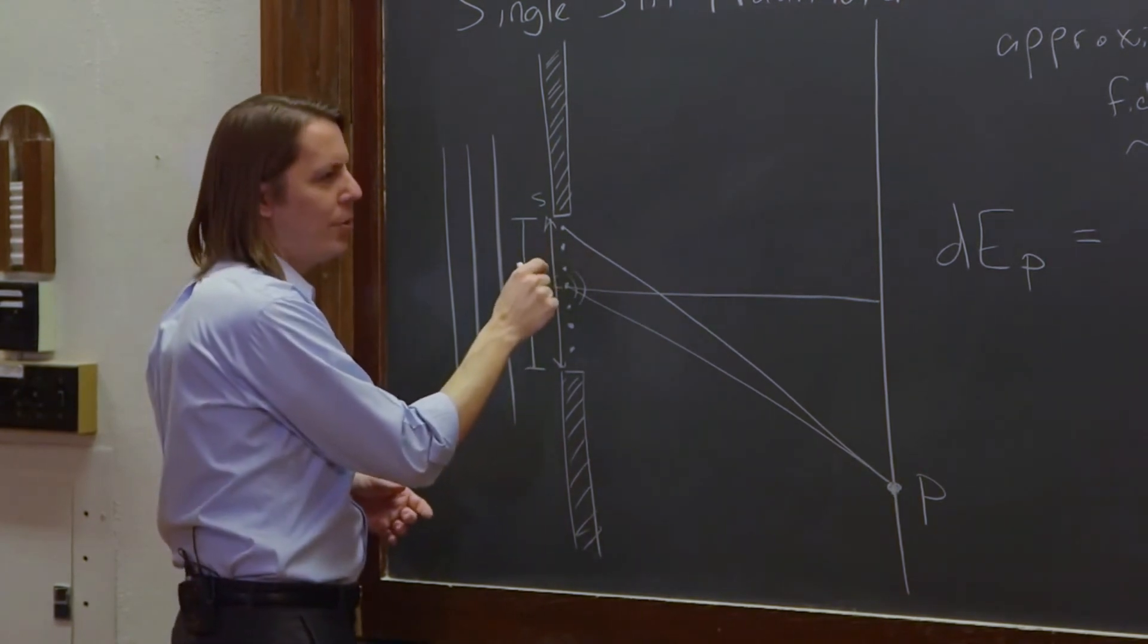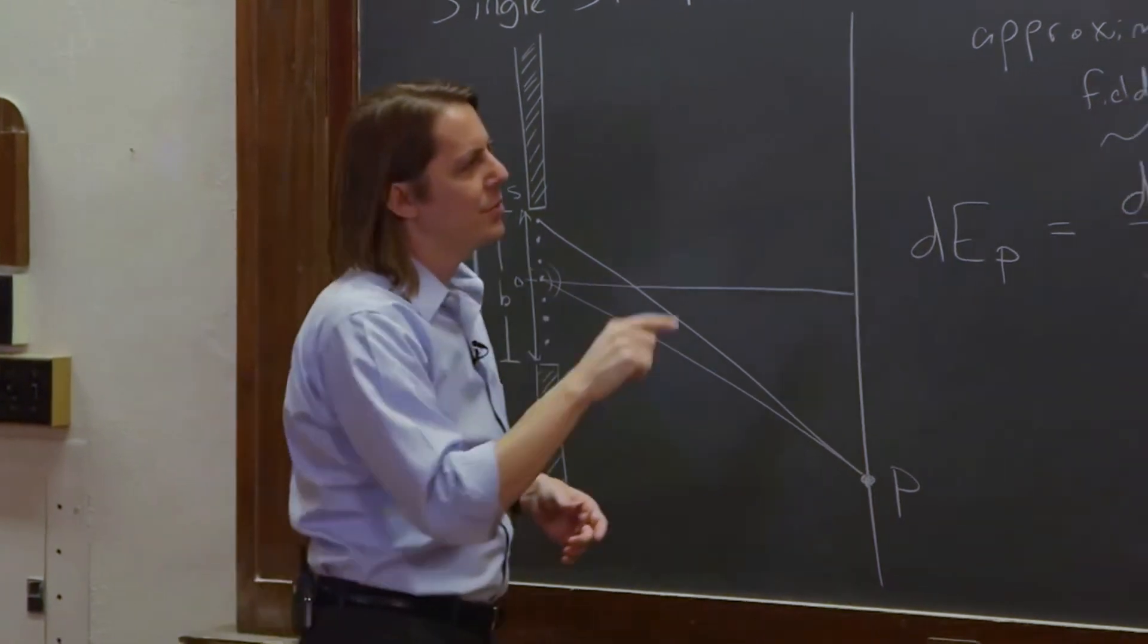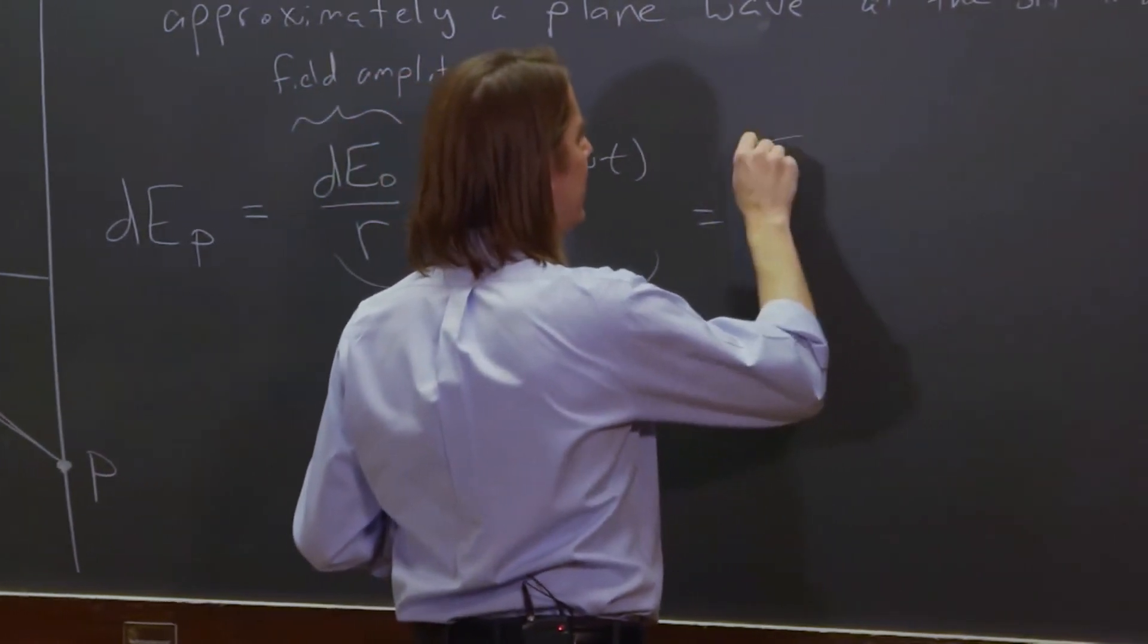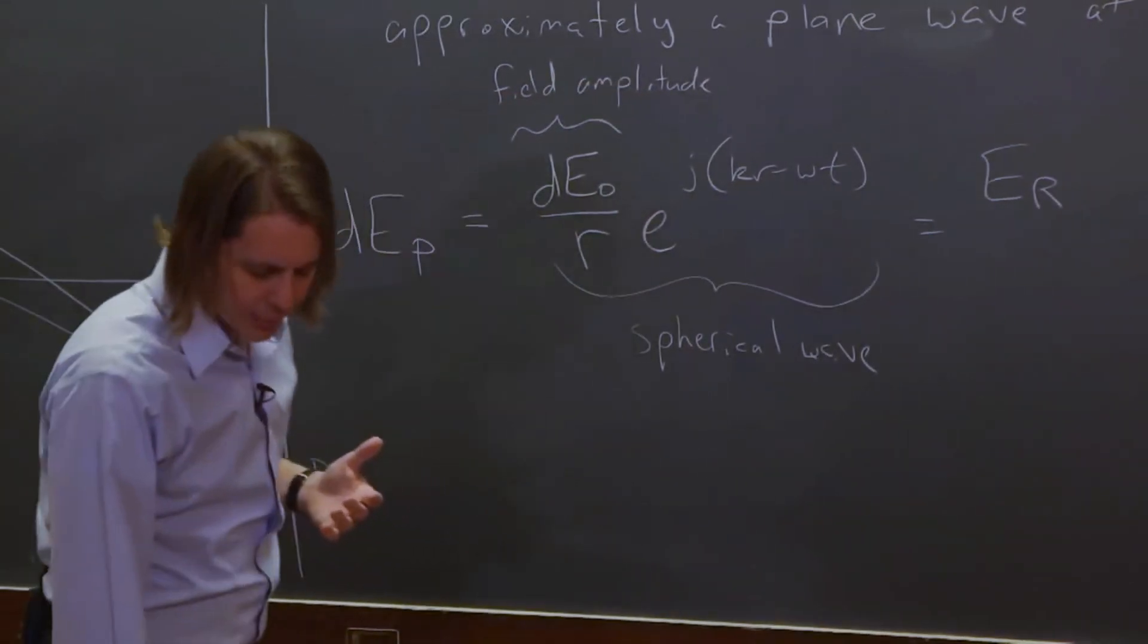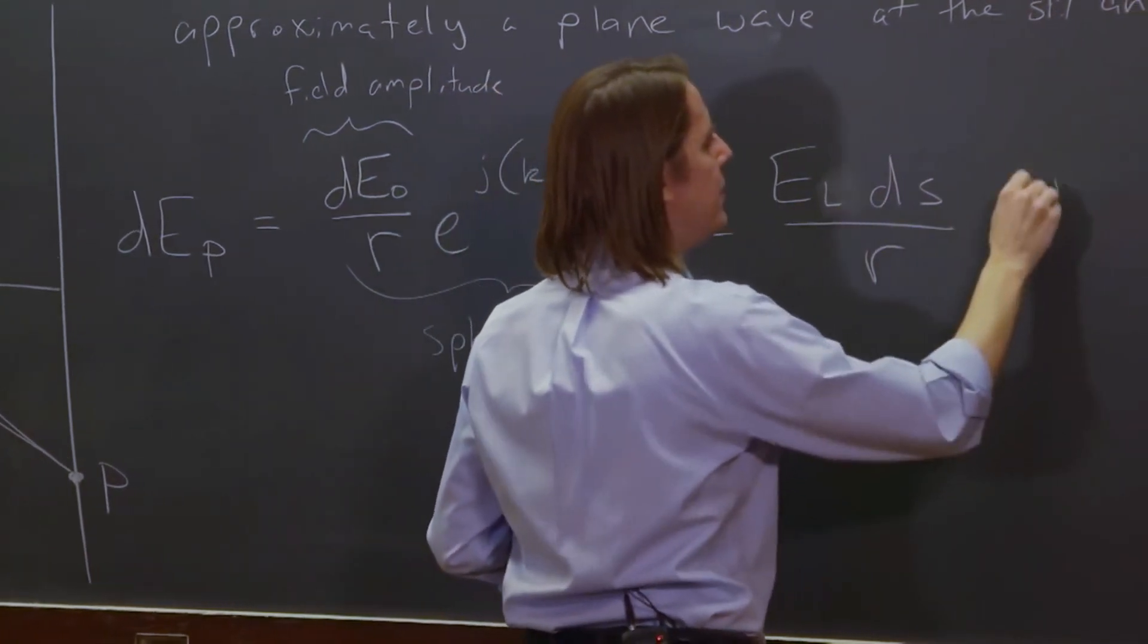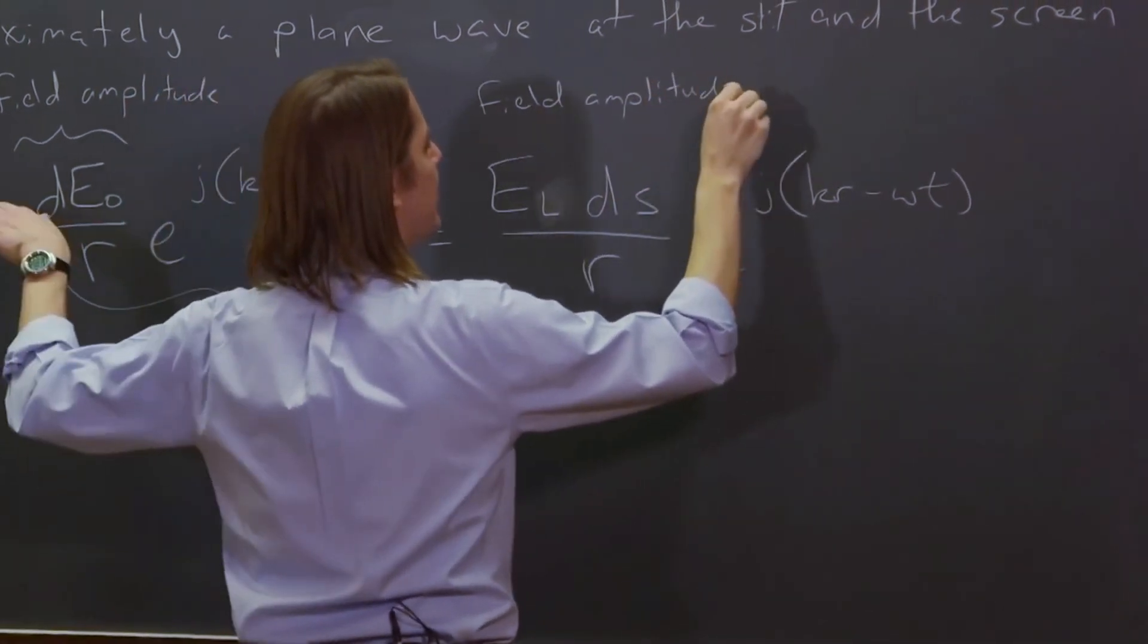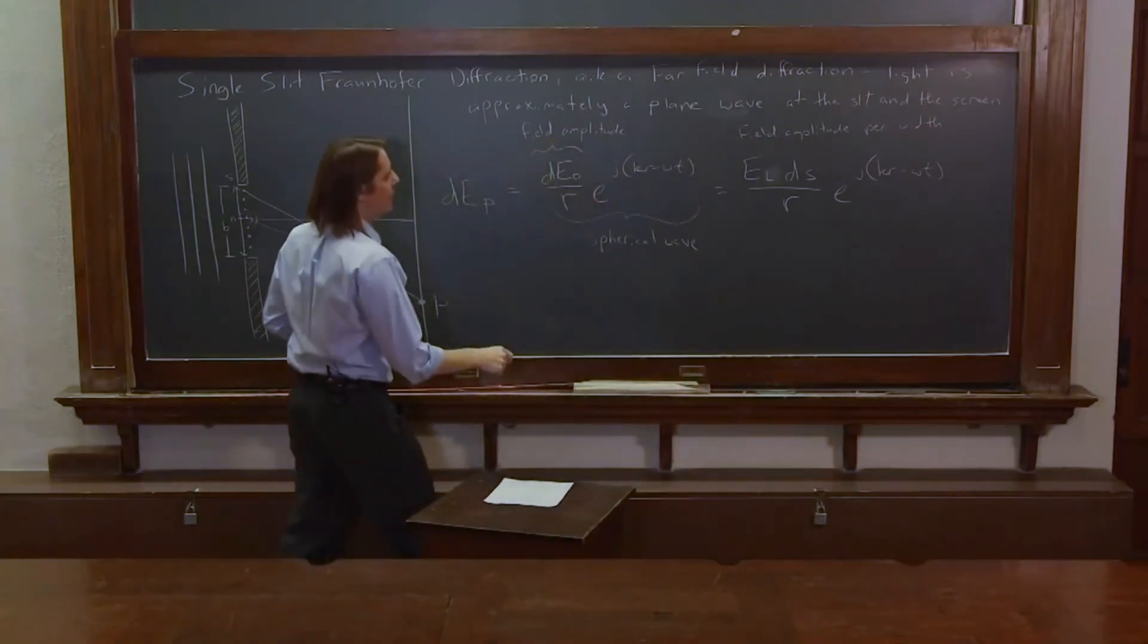So, the way we pick off one of our little Huygens wavelets, Huygens-Fresnel wavelets, is we talk about something times dS. So again, instead of the field amplitude, now we are going to go with the field amplitude per unit width. So that's now called E_L, times dS over R, e to the j(kR - ωt), where this is the field amplitude per width. That's the E_L. And it's no longer a differential, because that's really a value. That's a constant value that exists in the entire slit.